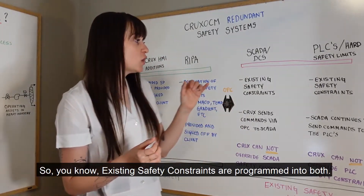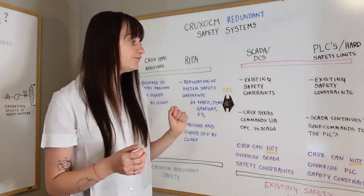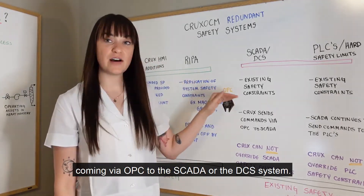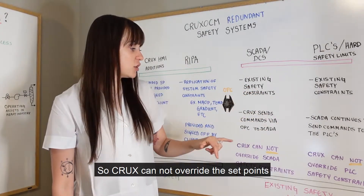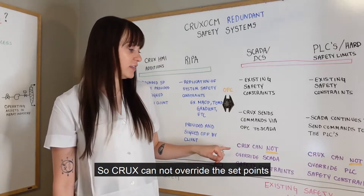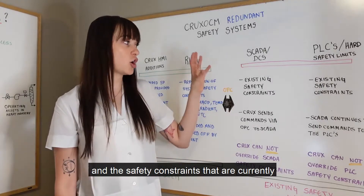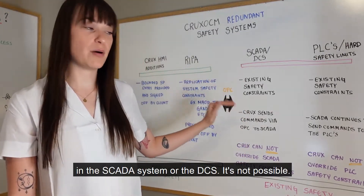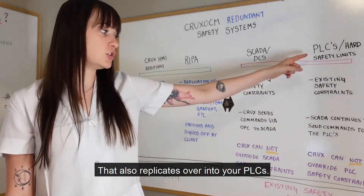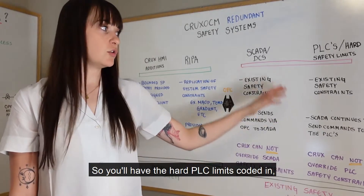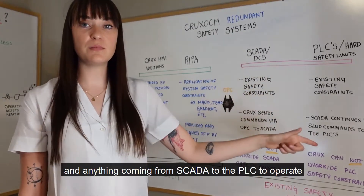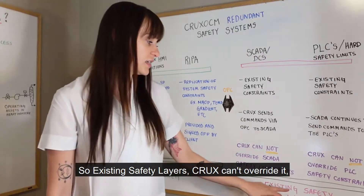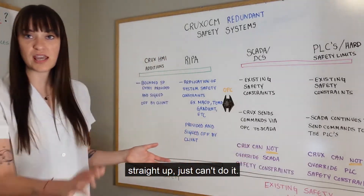Existing safety constraints are programmed into both systems. When Crux OCM's RIPA software sends set points via OPC to the SCADA or DCS system, Crux cannot override the safety-constrained set points currently in the SCADA or DCS — it's not possible. That also replicates into your PLCs, where hard PLC limits are coded in and anything coming from SCADA to the PLC cannot override those constraints. Crux simply can't override existing safety layers.